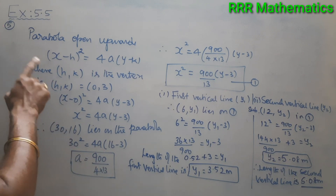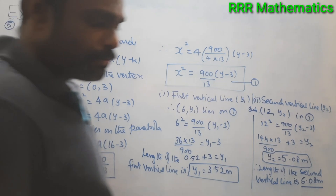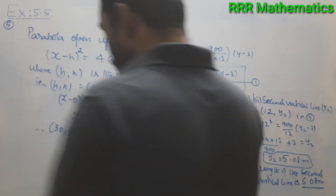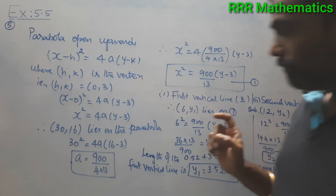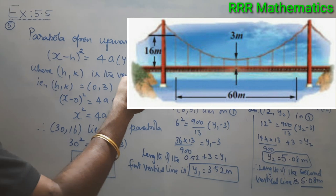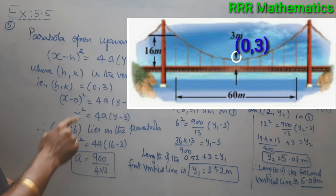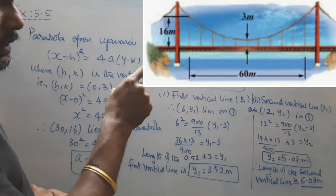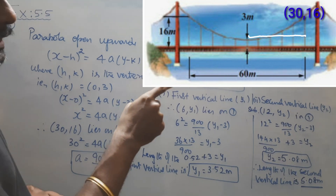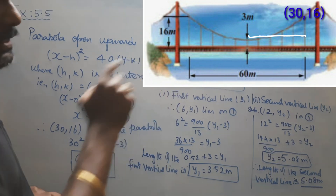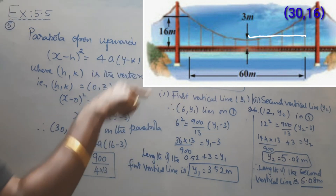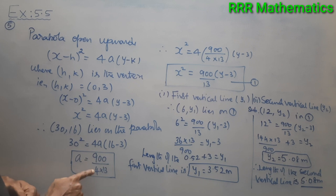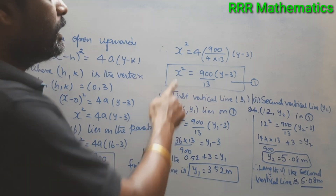To summarize: the parabola opens upward, with general equation (x − h)² = 4a(y − k) where (h, k) is the vertex. From the diagram, the vertex is at (0, 3), giving x² = 4a(y − 3). The distance from the vertex to the 5th vertical line is 30 meters and its height is 16 meters, so point (30, 16) lies on the parabola, giving a = 900 / (4 × 13).